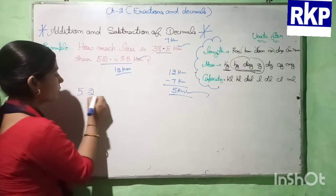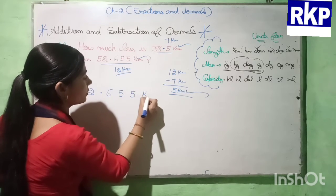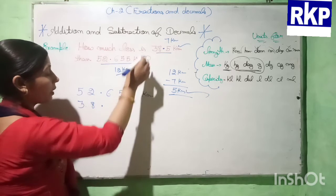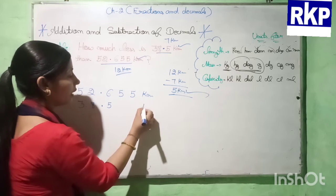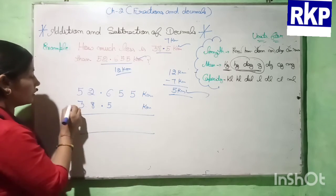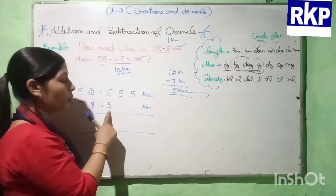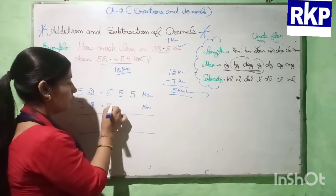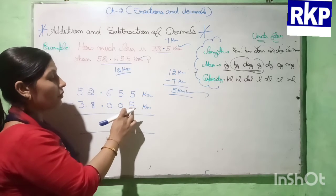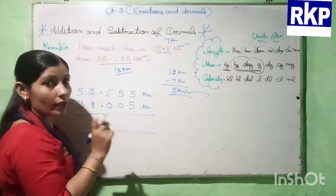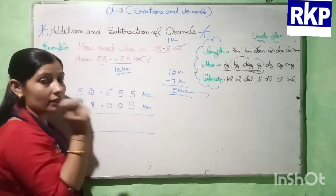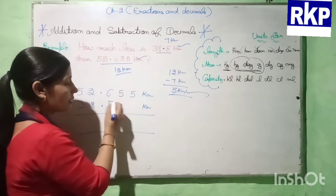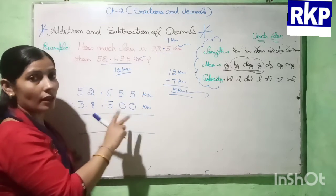We write 52.655 kilometers. Then we write 38.5 below: first put the decimal point, then 8, then 3, and after the decimal point we have 5. Now we have to subtract, but here we have 3 digits after the decimal and here only 1. So we will put 2 zeros after the 5. We must not write 0, 0, 5 because that would place 5 at thousandths place, but here 5 is at tenths place — we will not change the place of the given digit. So we write 5 as it is and put 2 zeros after it to make like decimals.